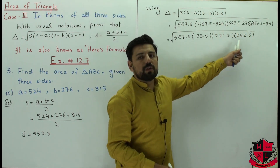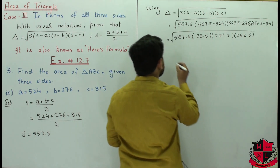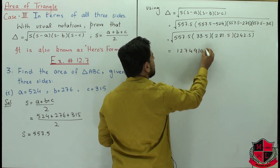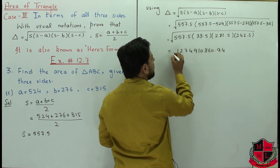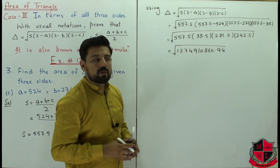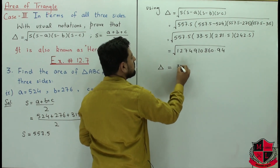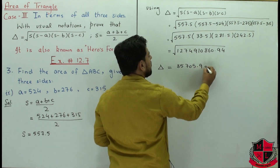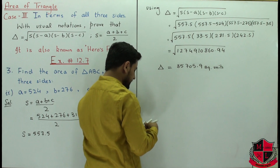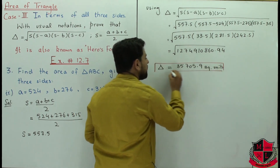Now we multiply all four values together: 557.5 × 33.5 × 281.5 × 242.5 equals approximately 1,274,910,860.94. Taking the square root of this product gives us the area of the triangle equal to 35,705.9 square units.